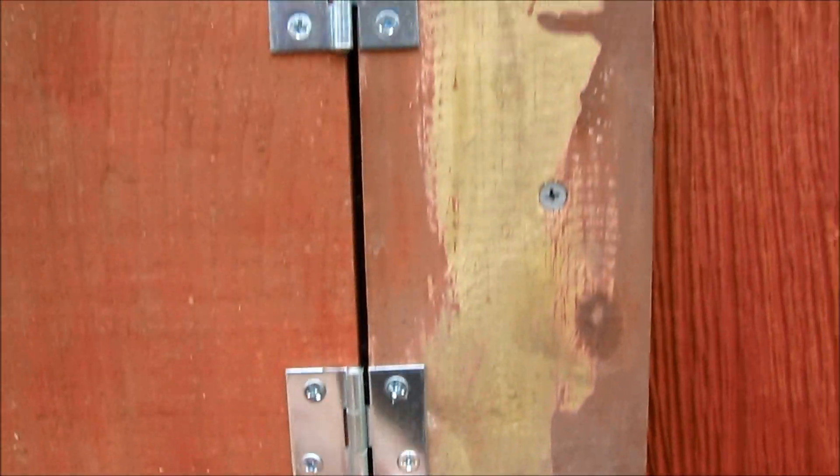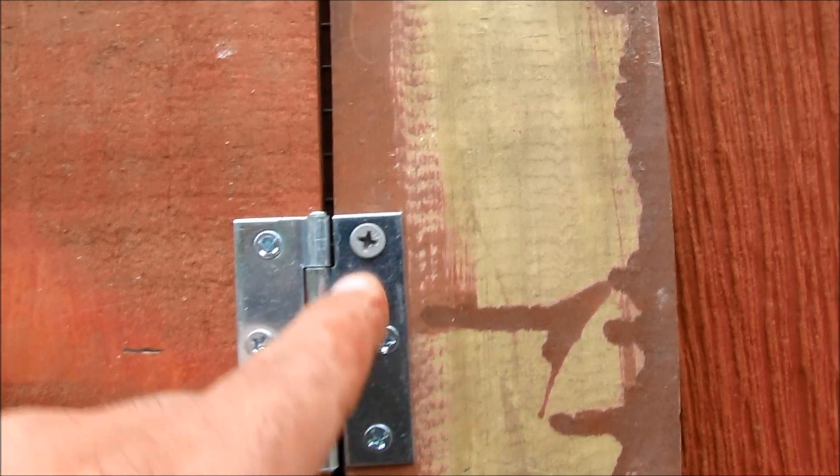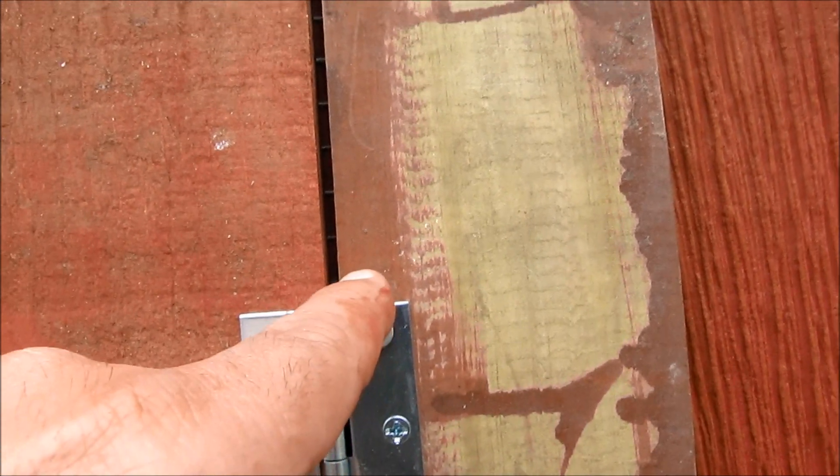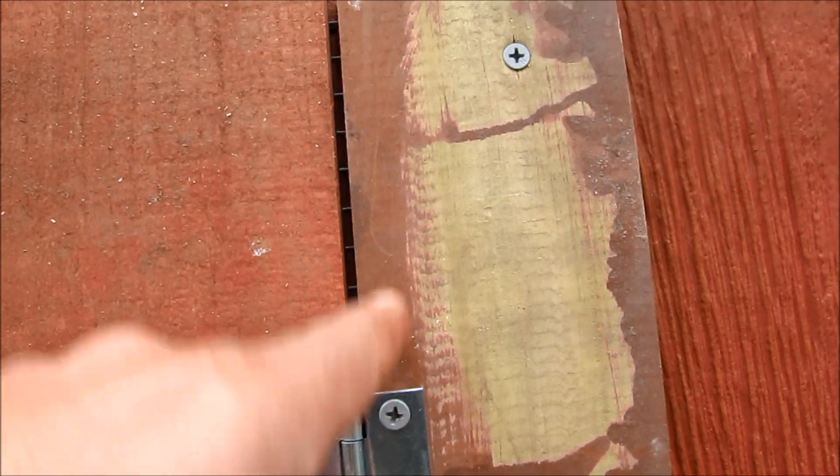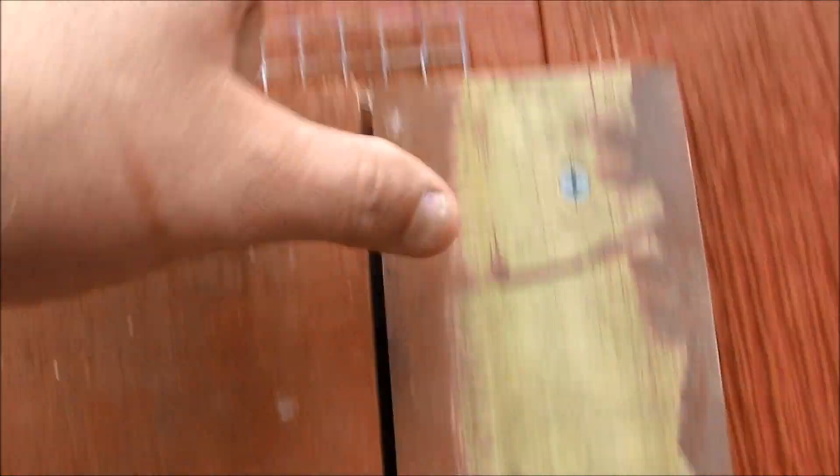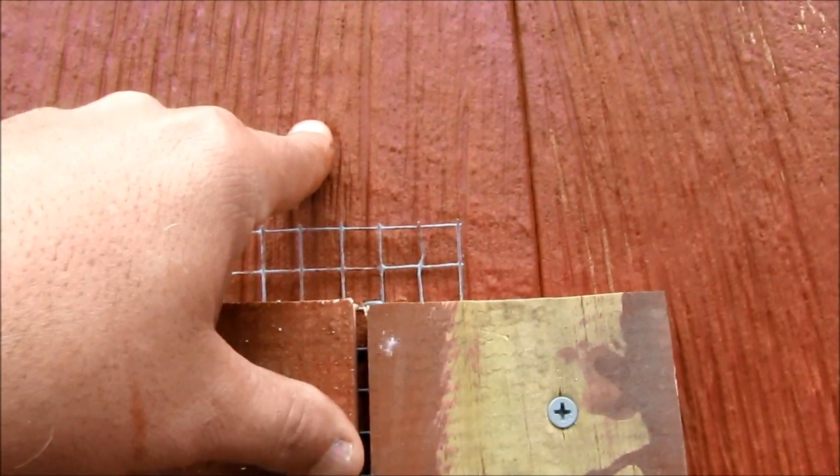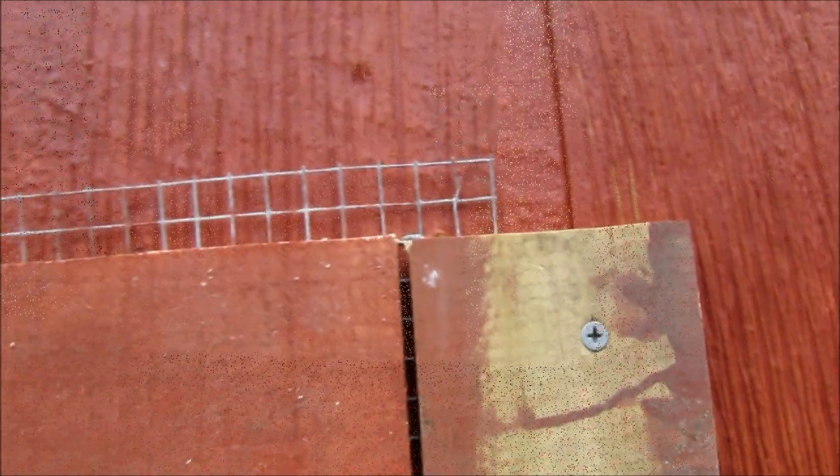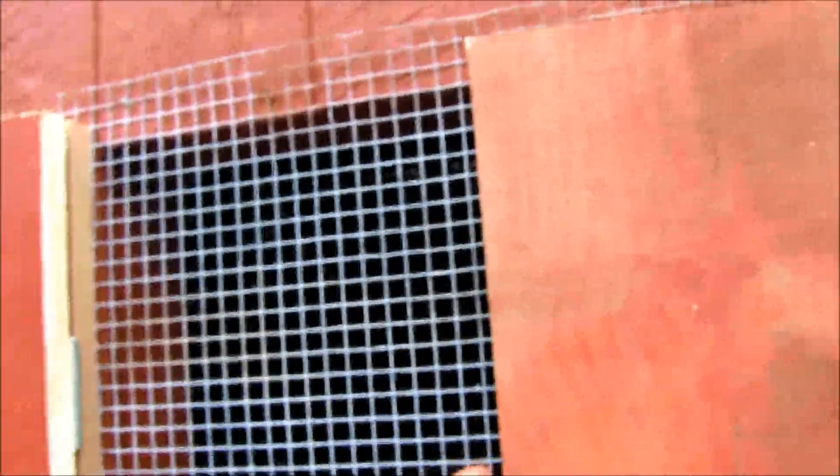Notice this screw here is a little bit bigger than the other ones, because this goes all the way through the hinge, through the one by four, through the wall, through this outside exterior board, all the way into the two by four on the inside.